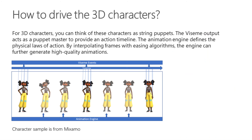For 3D characters, you can think of these characters as string puppets. The Viseme output acts as a puppet master to provide an action timeline. The animation engine defines the physical laws of action. By interpolating frames with easing algorithms, the engine can further generate high-quality animations.